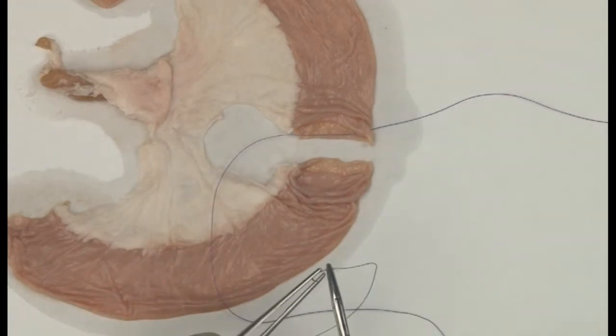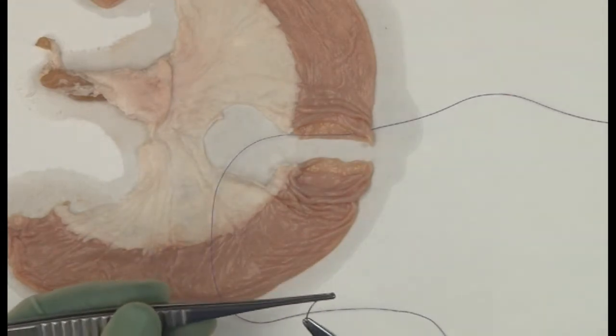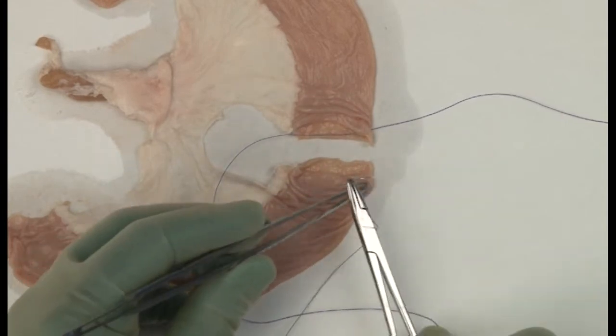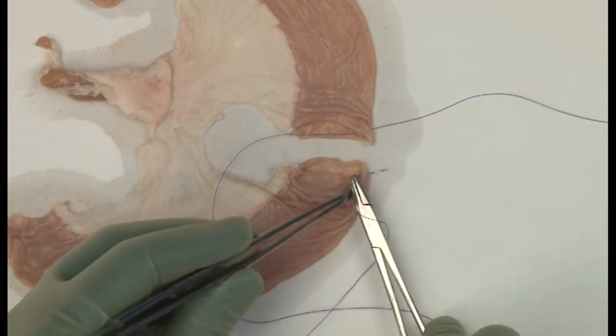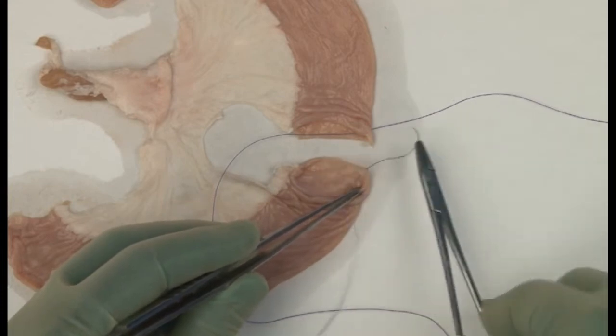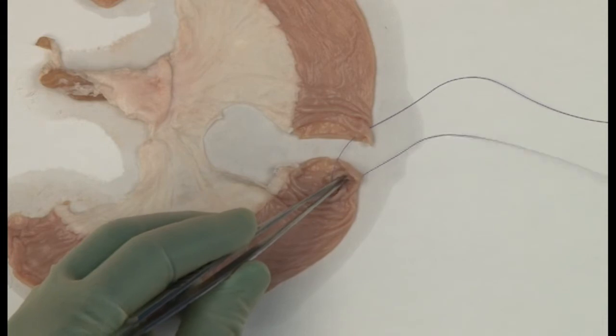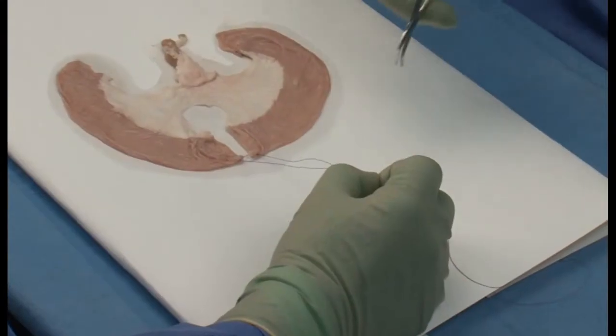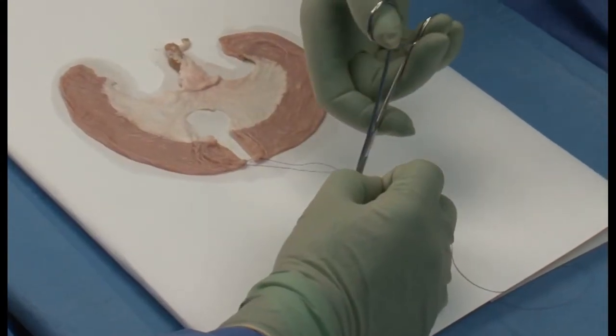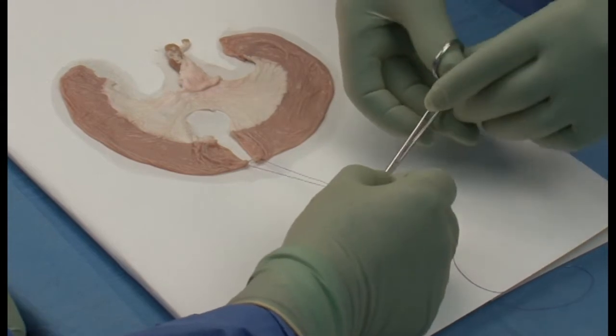We start the anastomosis at the anti-mesenteric border, inserting a suture in the anti-mesenteric angle of the bowel from outside to in, and then across to the other loop of bowel from inside to out. Place both ends of the suture in a hemostat, but leave them untied.